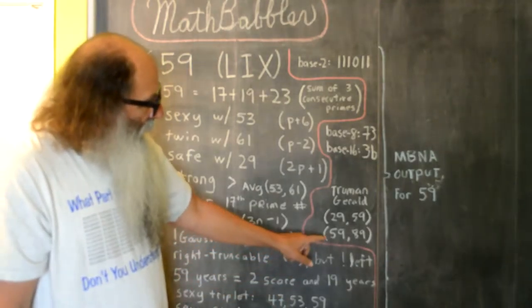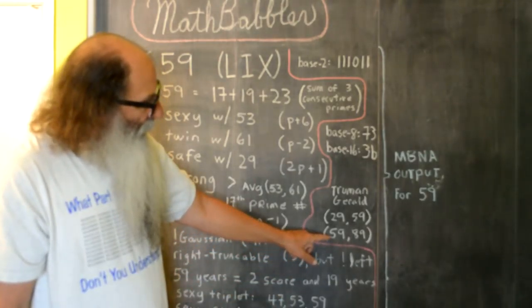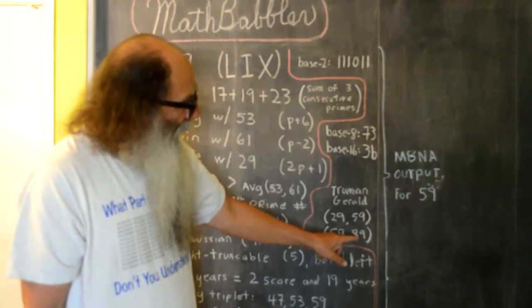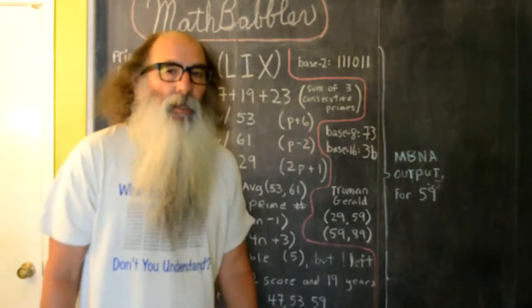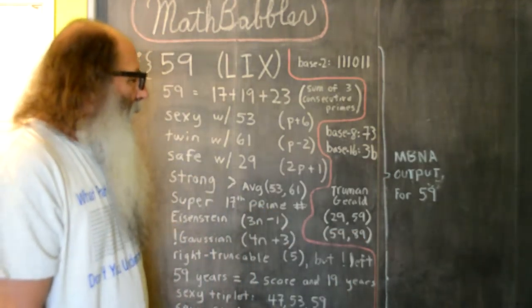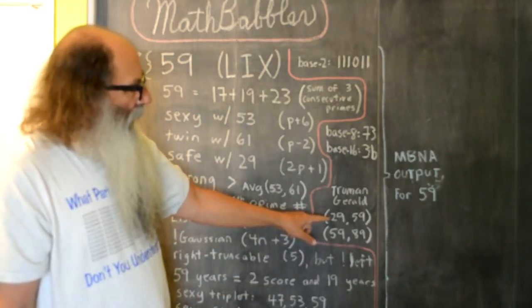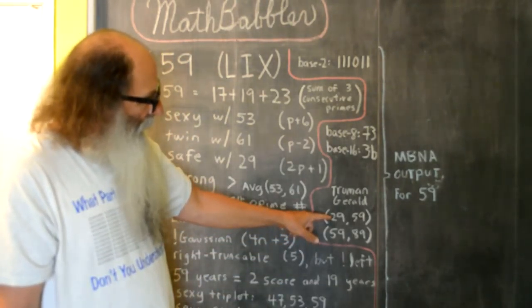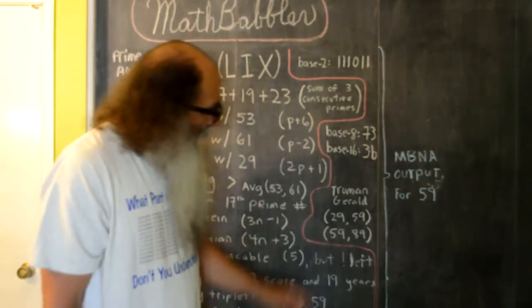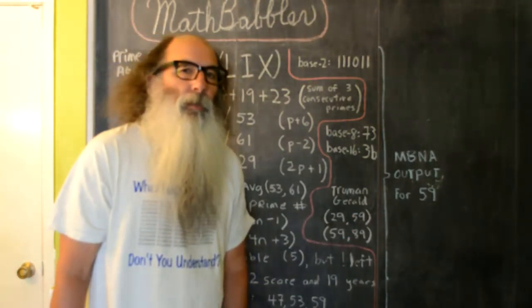And so I just turned 59. In less than a month, Truman will turn 89. 59 and 89 are both prime. And it turned out when I turned 29, just less than a month later, Truman turned 59, and 29 and 59 are prime numbers.